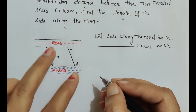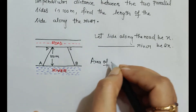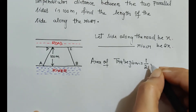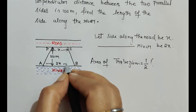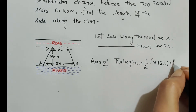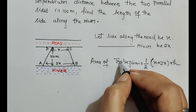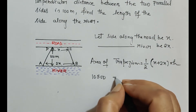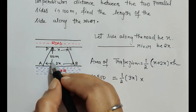With the help of the formula, we can easily find the sides of the trapezium. The area of a trapezium is half of the sum of the parallel sides into height. So we have x and 2x, giving us half of (x + 2x) × height. The area is already given as 10,500 square meters, which equals half of 3x and the height is 100 meters.